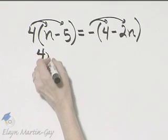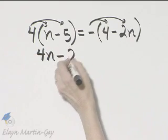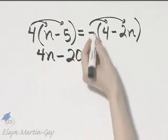So I will take a moment and use the distributive property and remove parentheses. 4 times n is 4n minus 4 times 5 is 20 is equal to.